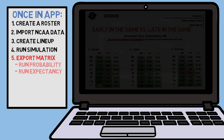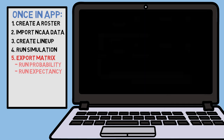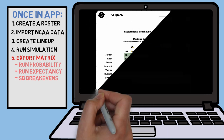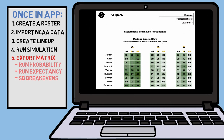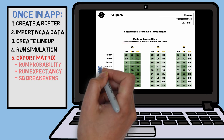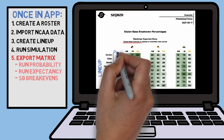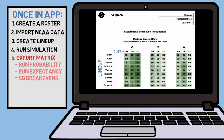Next, we will hop on over to the stolen base break-evens percentage breakdown. This new sheet covers the stolen base success percentage needed to maximize your expected runs scored that inning. This layout is a little different, hosting the whole lineup on the left representing all of our columns, with outs listed across the rows.